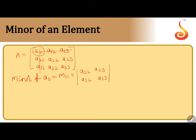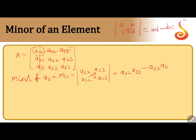This is the determinant of a 2×2 matrix. The determinant of a 2×2 matrix ABCD is equal to AD minus BC. So here we get A22 into A33 minus A32 into A23. This is the minor of element A11.